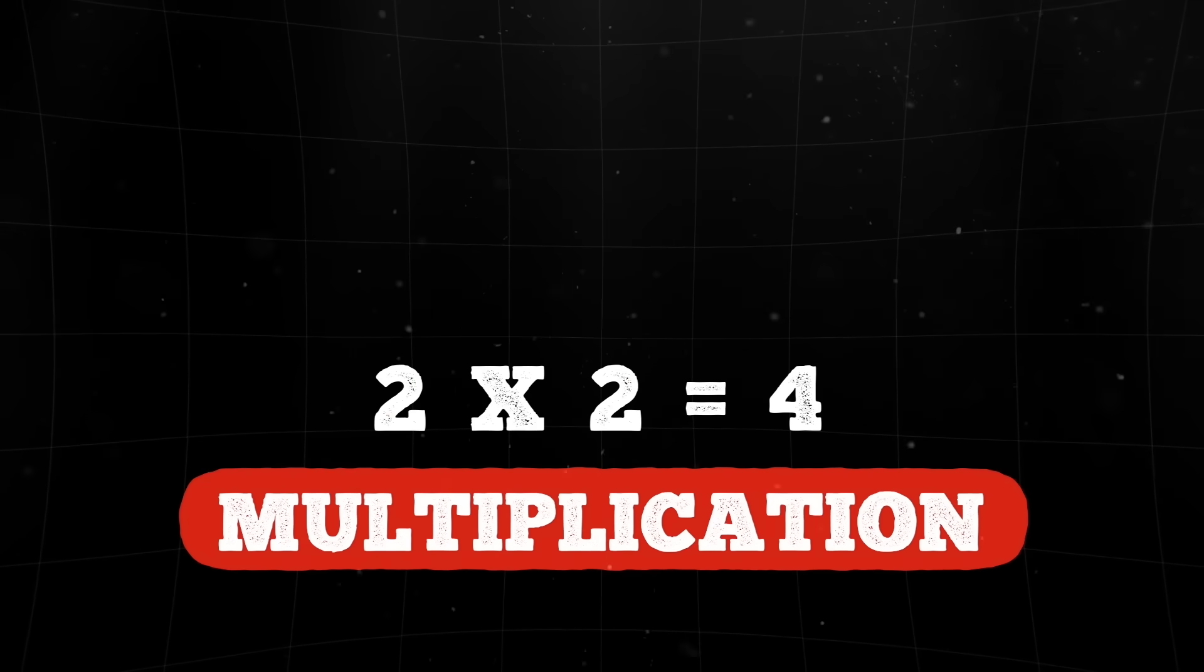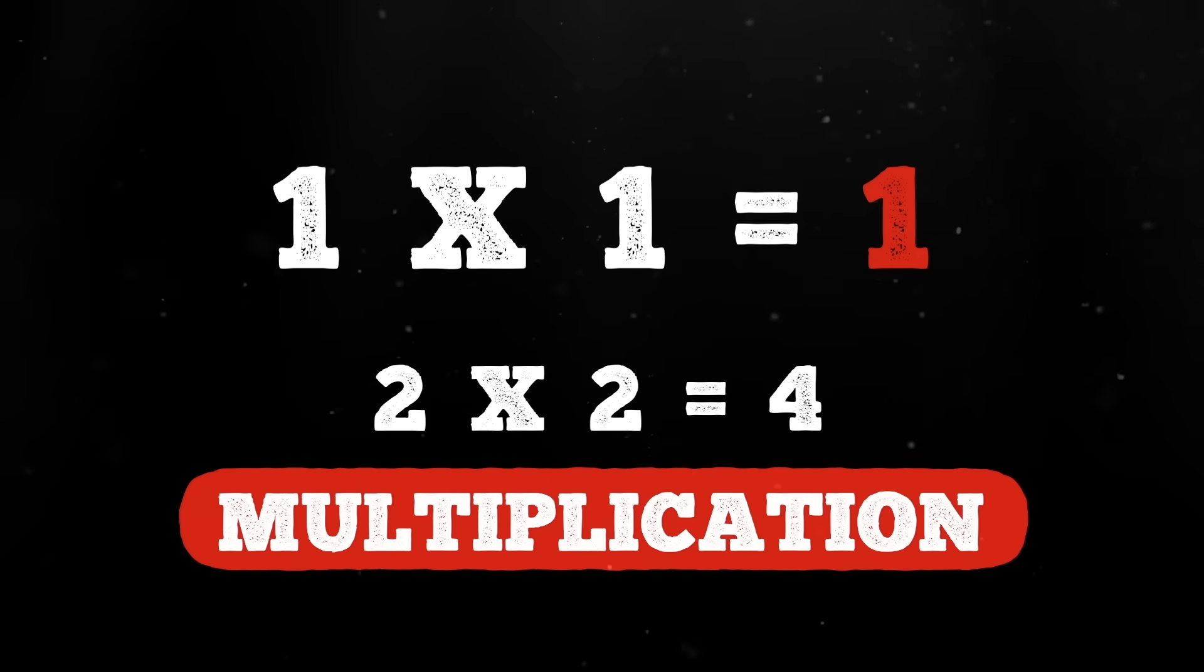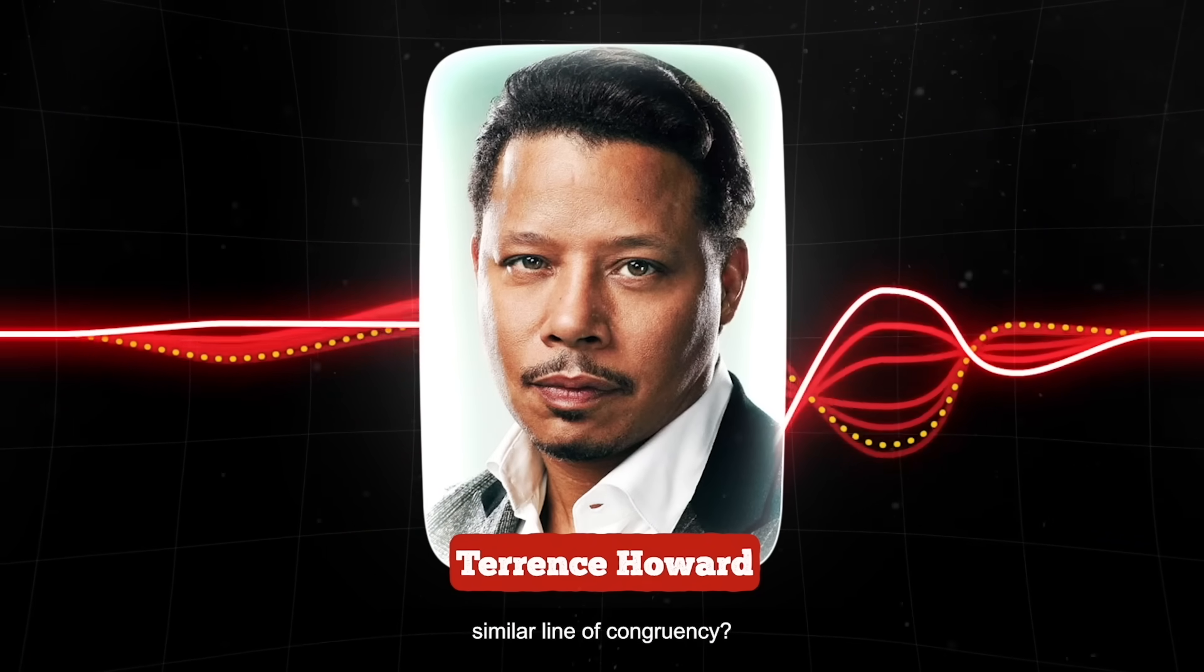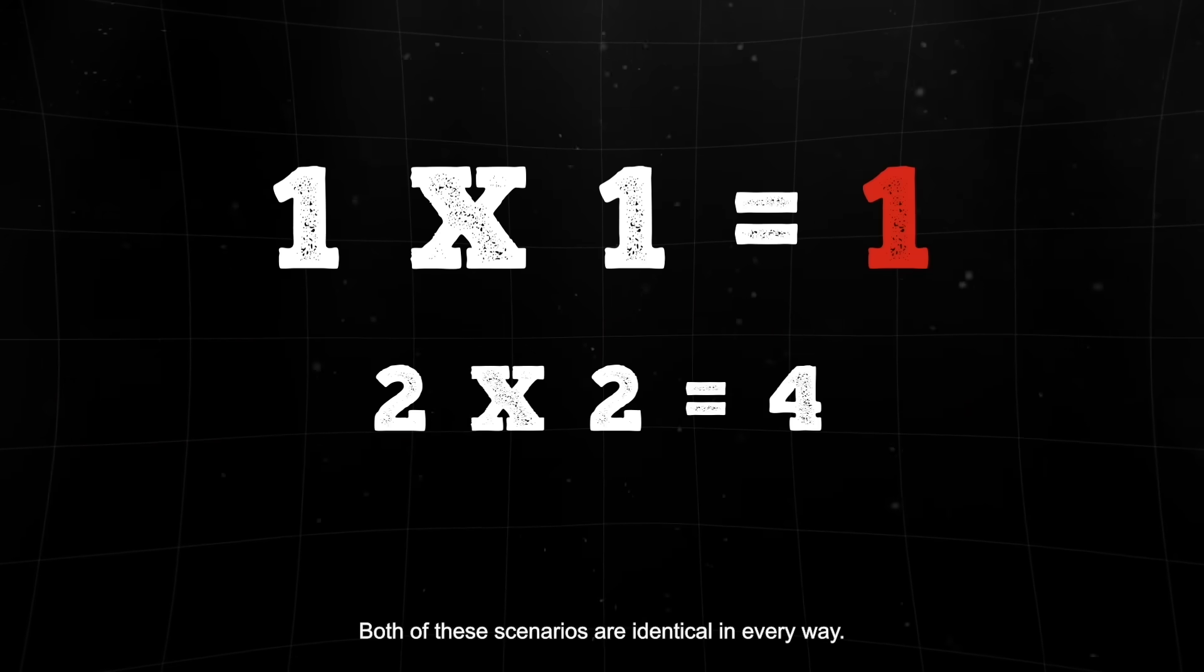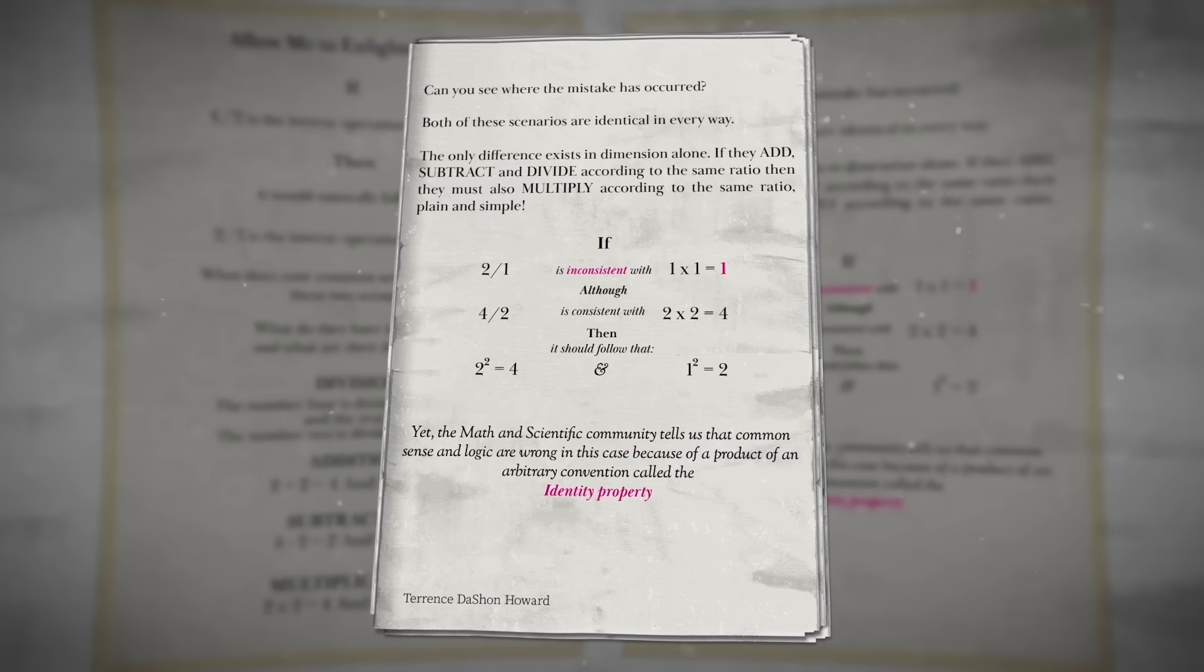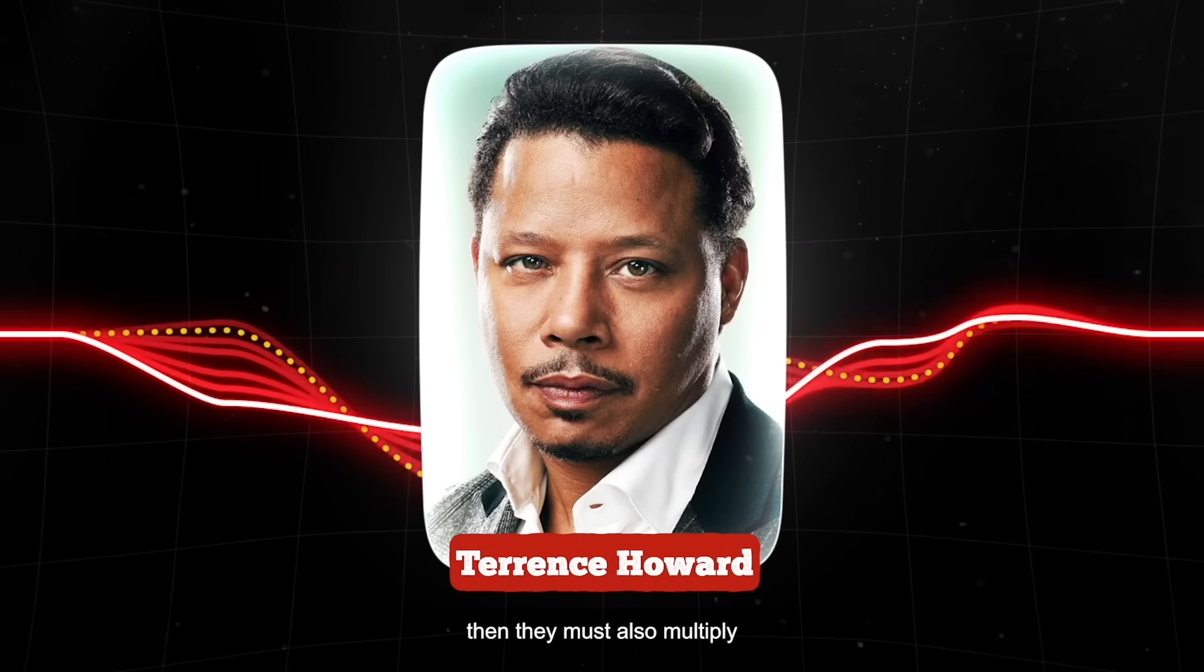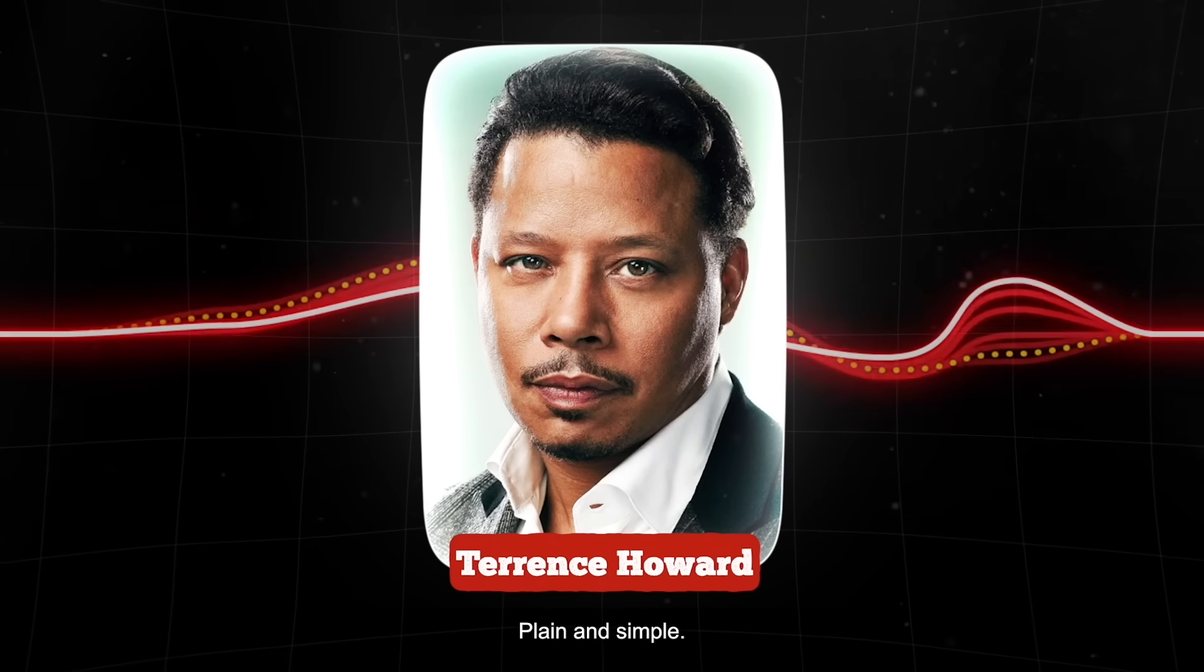Four minus two equals two. And two minus one equals one. Multiplication. Two times two equals four. And one times one equals one. Does that make sense to anybody there? Does that seem like it's following any similar line of congruency? Both of these scenarios are identical in every way. The only difference exists in dimension alone. If they add, subtract, and divide according to the same ratio, then they must also multiply according to the same ratio, plain and simple.